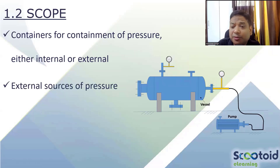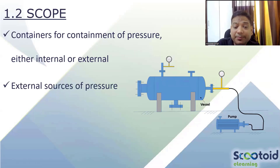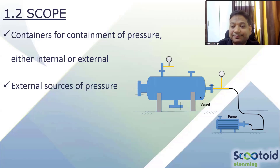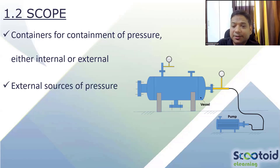The source of pressure may be external, which is most common. We use a pump to maintain flow, and whatever pressure we maintain through that pump will also go into the vessel — that is called an external source. Now, can you give me an example of an internal source of pressure? Most of the time you will see pressure coming from an external source.